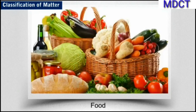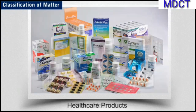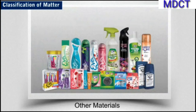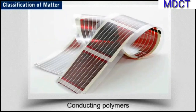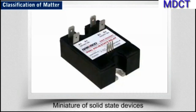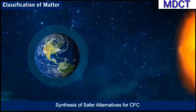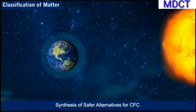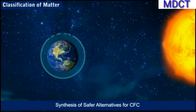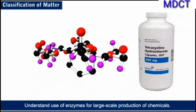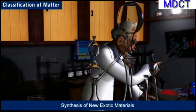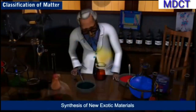Meeting human needs in producing food, healthcare products and other materials aimed at improving the quality of life. Producing superconducting ceramics, conducting polymers, optical fibers and large scale miniature of solid state devices. Synthesizing safer alternatives to environmentally hazardous refrigerants such as CFCs — chlorofluorocarbons — responsible for ozone depletion in the stratosphere. Understanding biochemical processes and the use of enzymes for large scale production of chemicals.